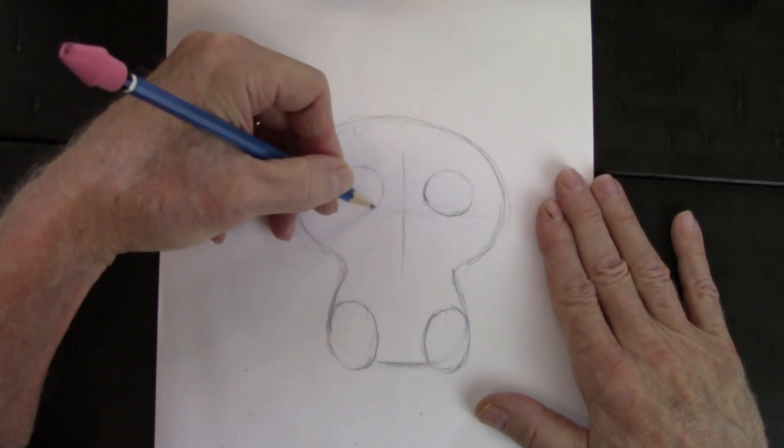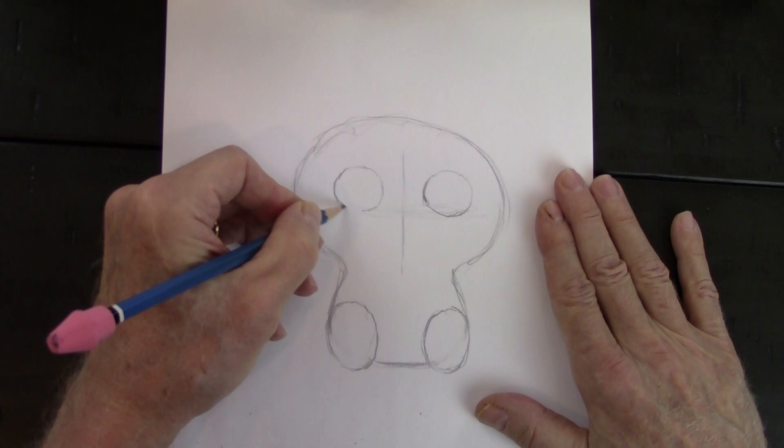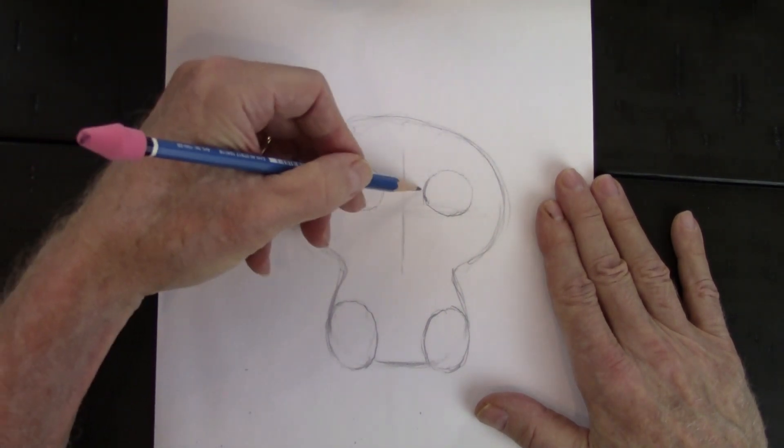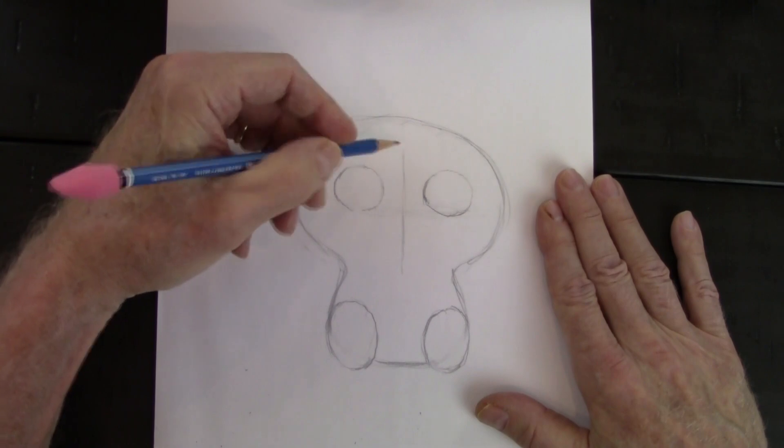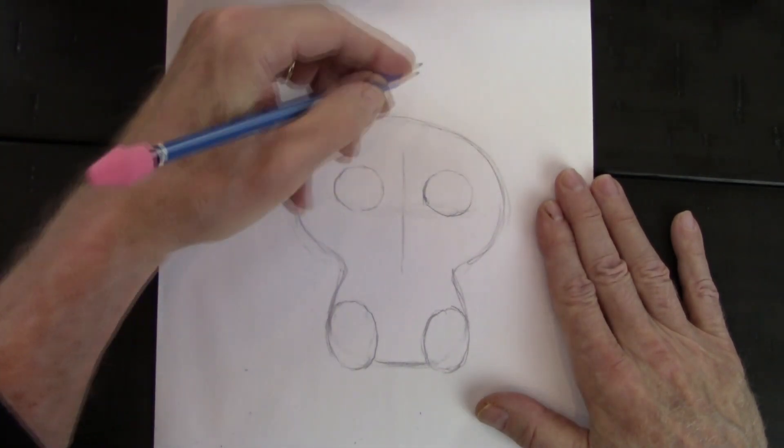We'll darken it in a minute. You notice that they're both just as close to the center line. That's what keeps them even. Measuring the eyes against the center line.